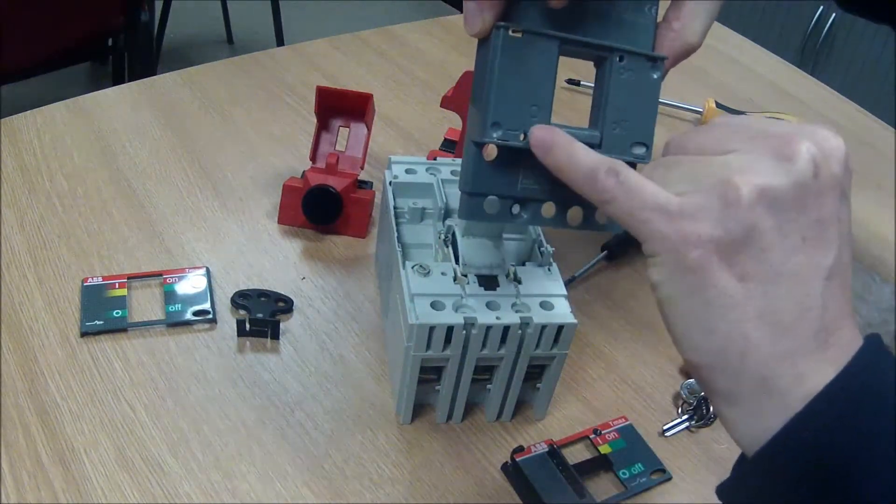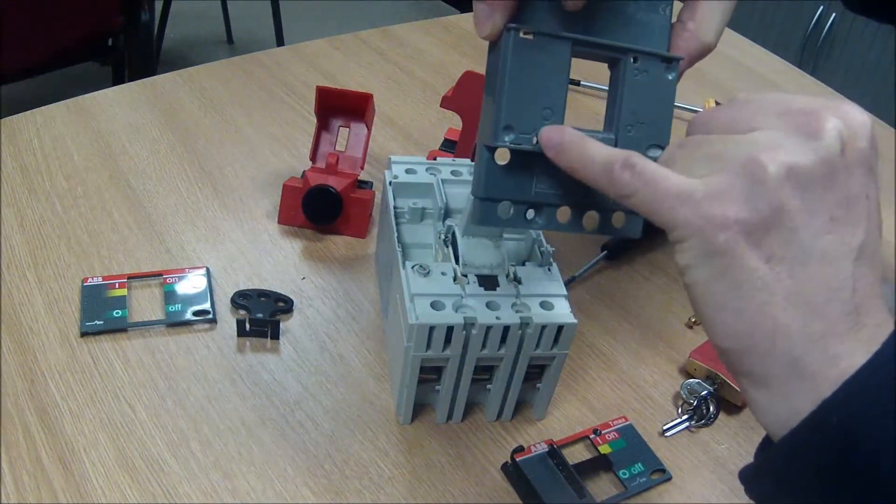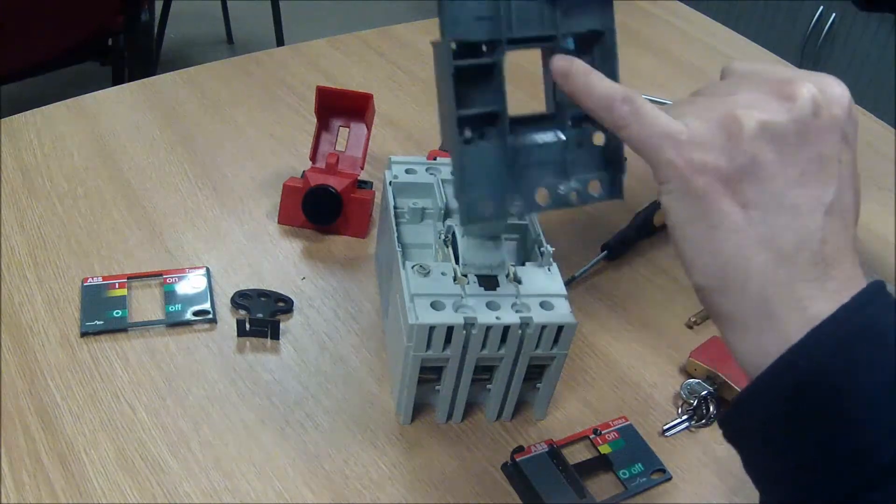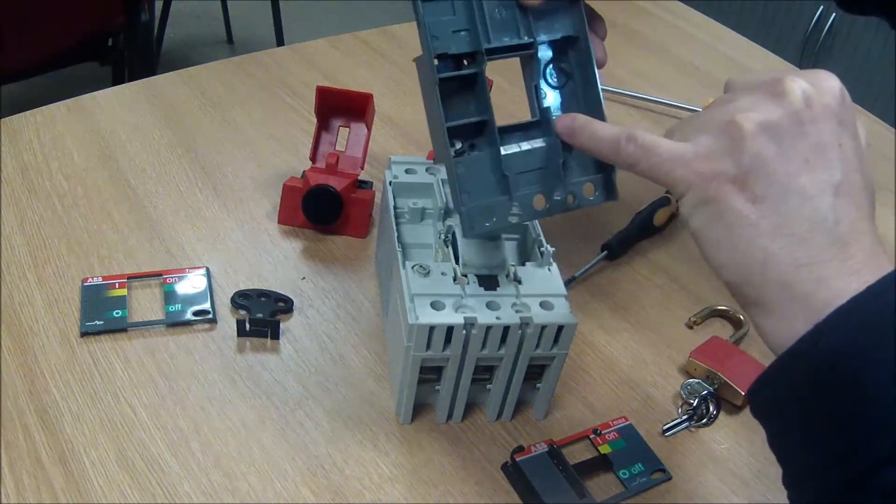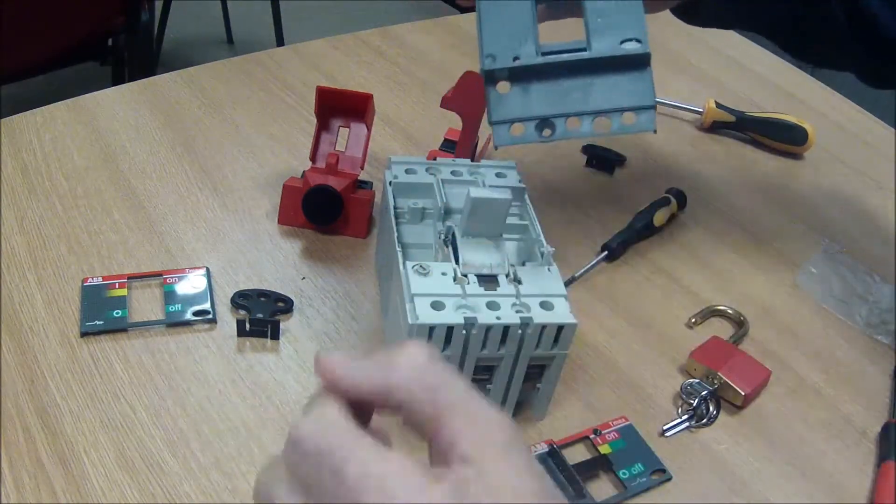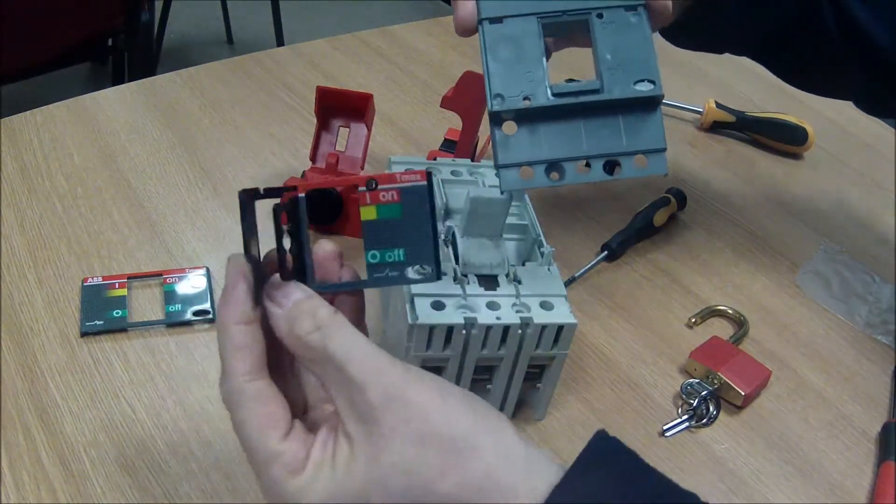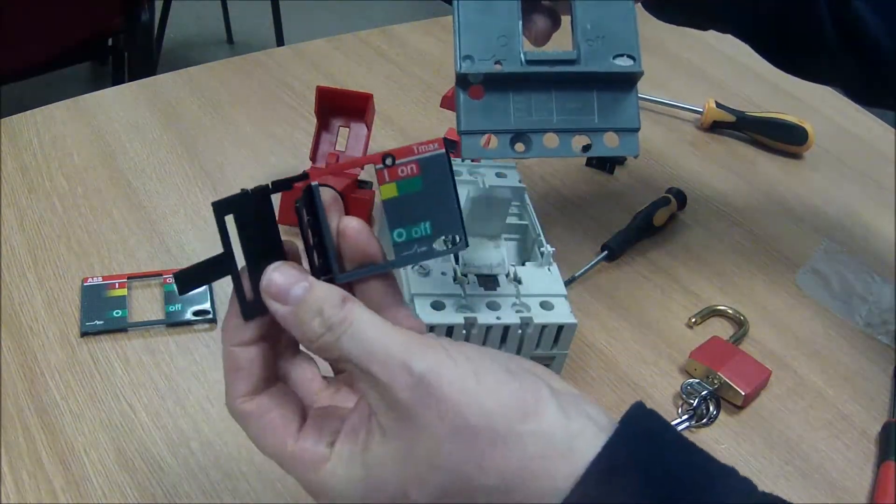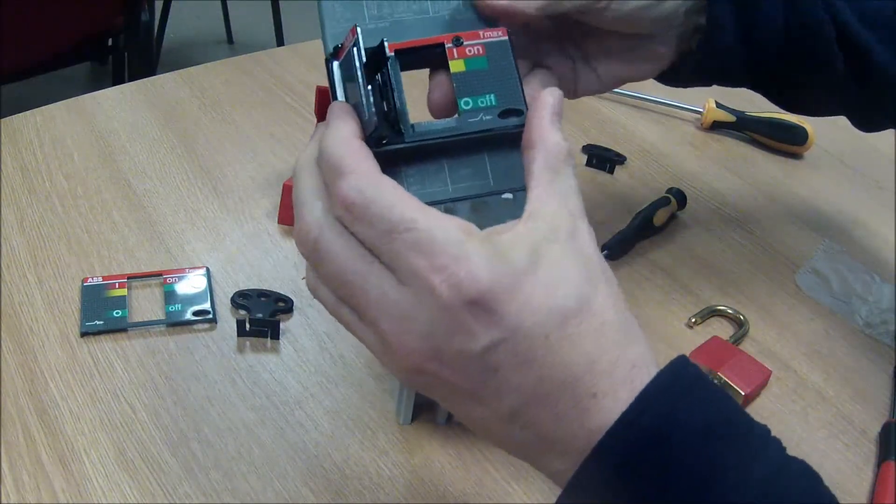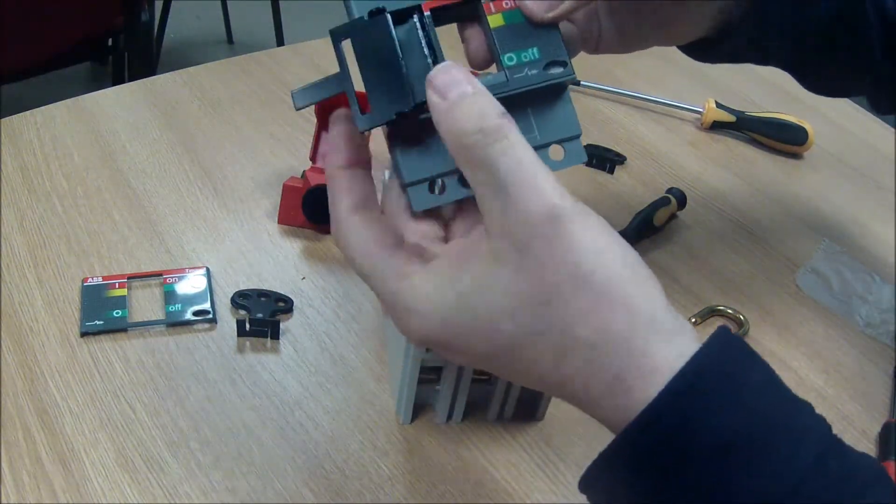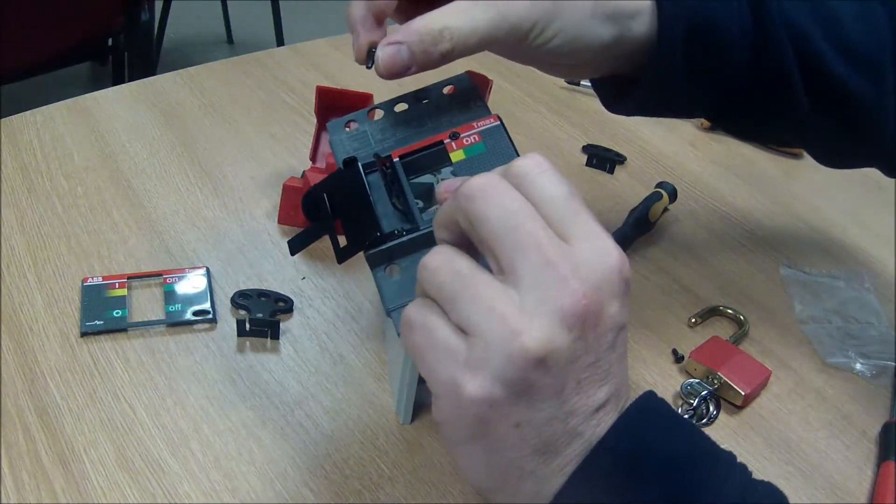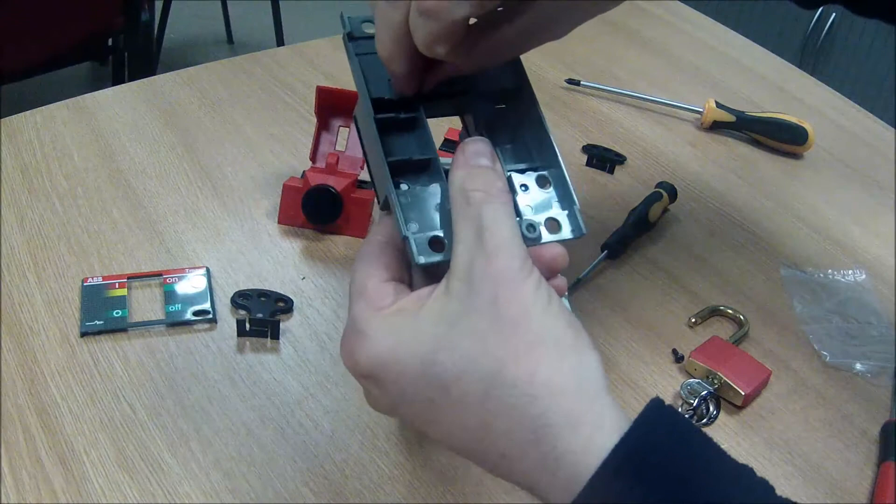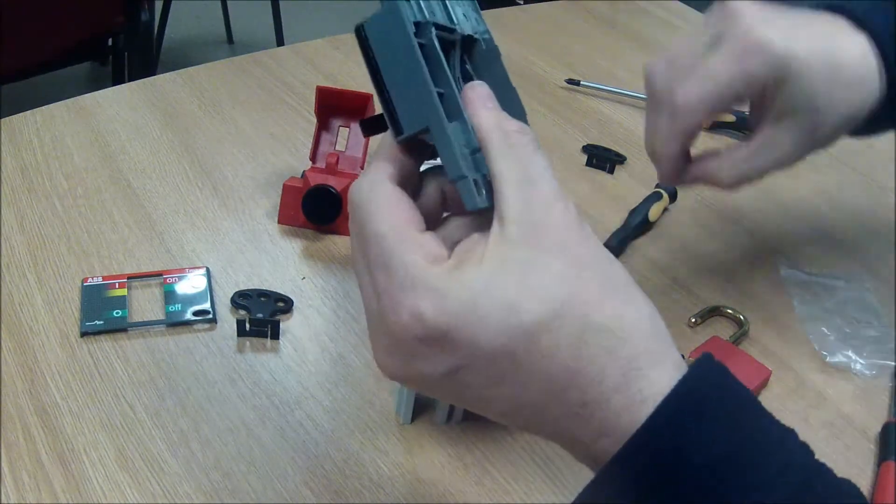And you can see these two holes here. Now those aren't normally there. You have to either punch them through from the back or what I did here was I actually drilled those out. So this replacement component here, the lockout device, fits over the front like that. And in the pack come these two small threaded screws and you insert those from the back and tighten those up.